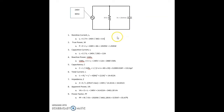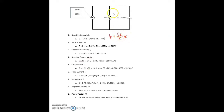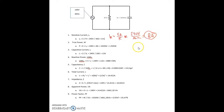First, the current flowing through the resistor. Current through the resistor equals the voltage across the resistor divided by the resistance. In a parallel circuit, voltage is the same across all branches and equals the applied voltage. So that equals 240 volts divided by 30 ohms, and we get 8 amps.